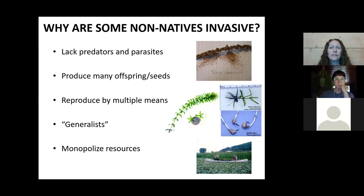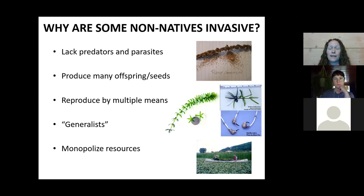Usually invasives are generalists in that they can live and thrive in a wide variety of habitats, temperatures, or water chemistry. They're also very good at monopolizing resources. With aquatic invasive plants, we tend to see them grow into thick dense mats across the surface of the water, monopolizing sunlight and shading out native species underneath.